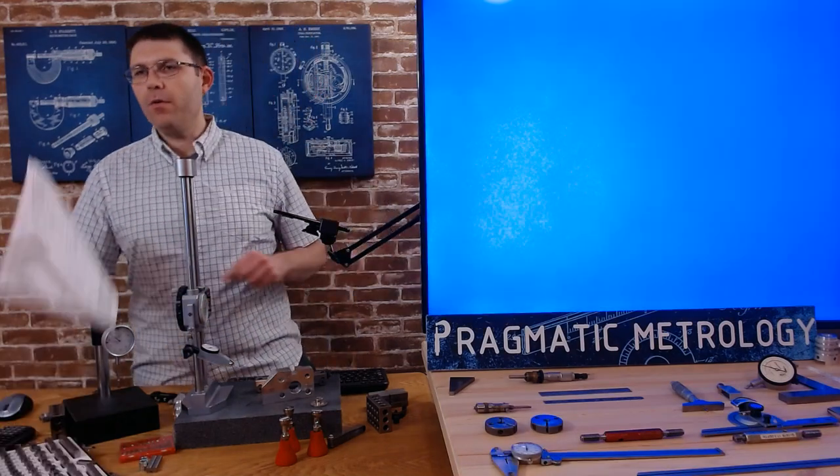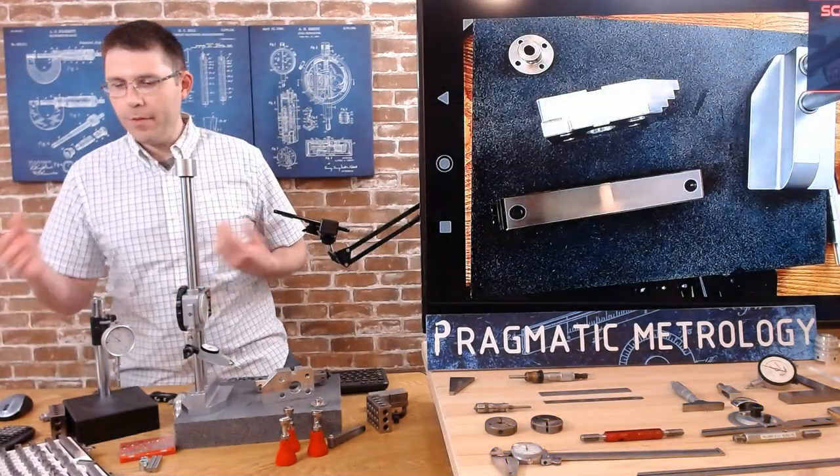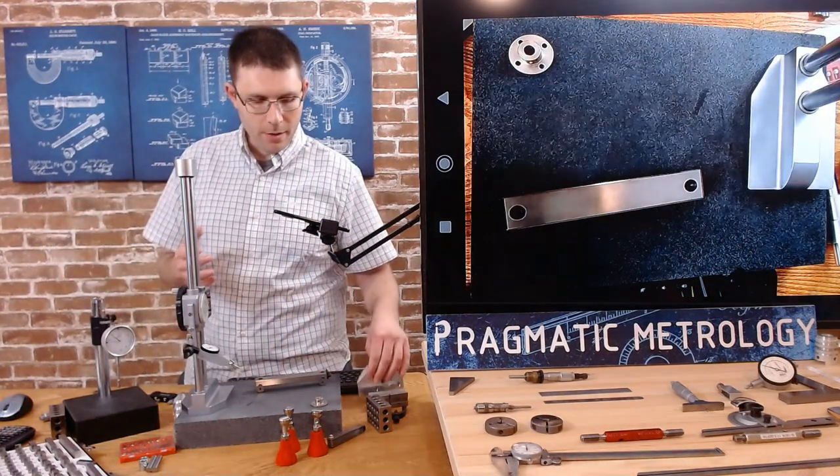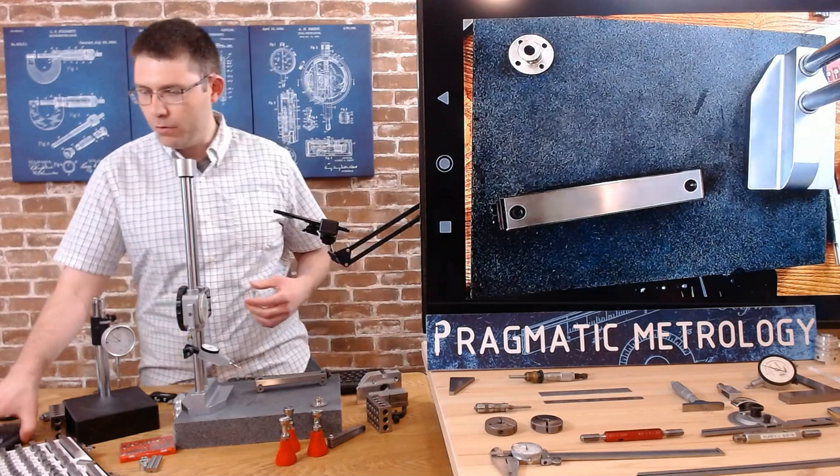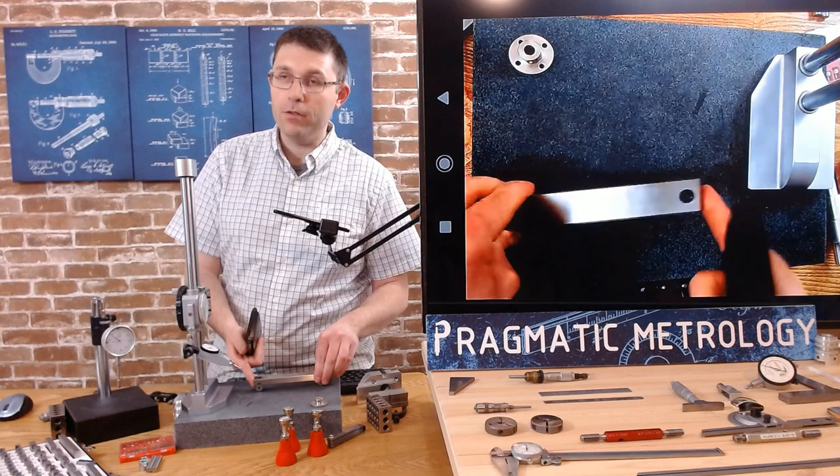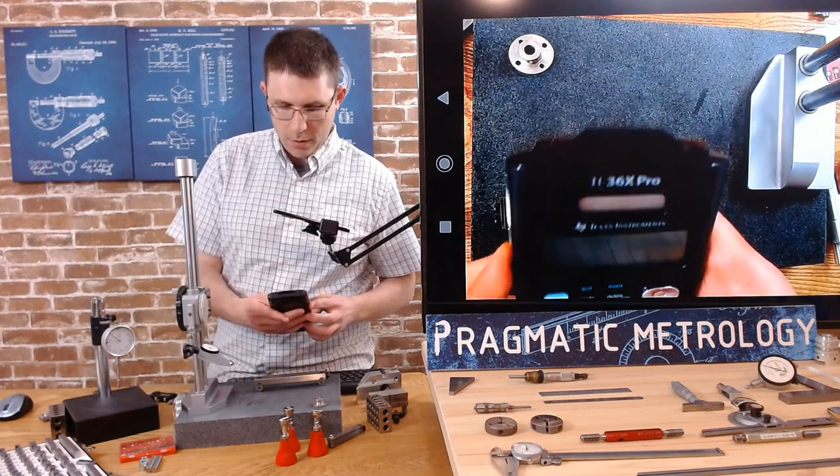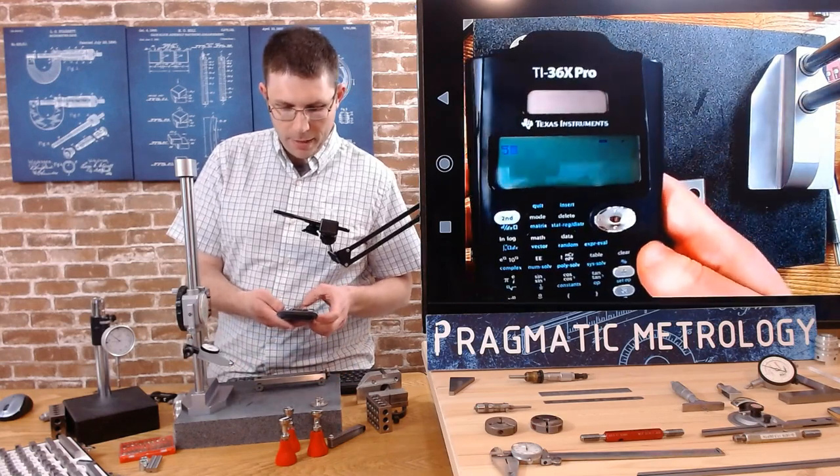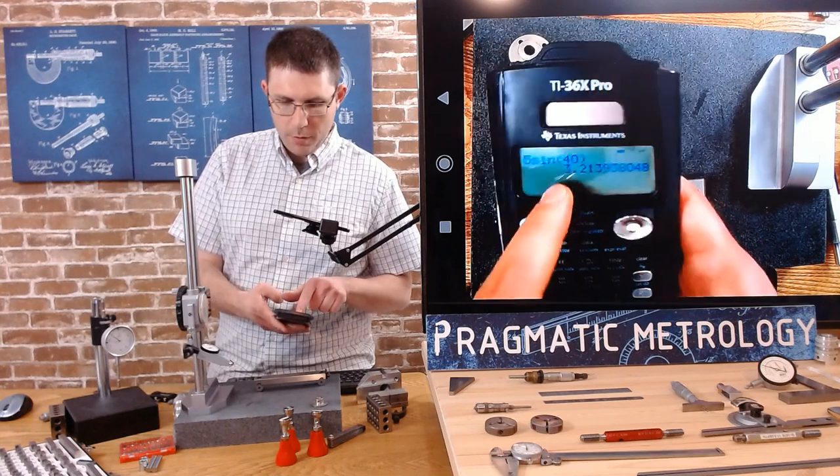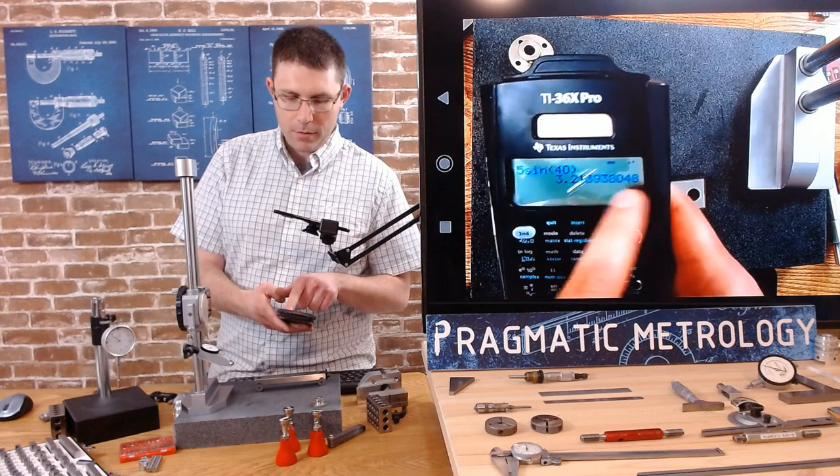If you haven't watched the video on angle measurement and sine bars, you may want to check that out to get more info. But in order to figure out how much of a gauge block stack to make, we're going to do a simple equation. We're going to do 5 times the sine of 40 because we have a 5 inch bar: 3.2139 and some change.